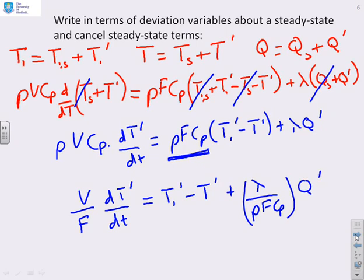However, what you'll notice is we actually have two inputs. We've got an input which depends on the input temperature, which may change, and an input of the steam flow. So there are two different inputs which have an impact on the temperature of the output.